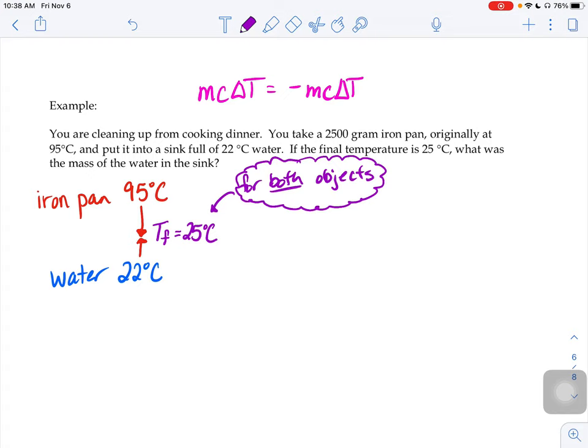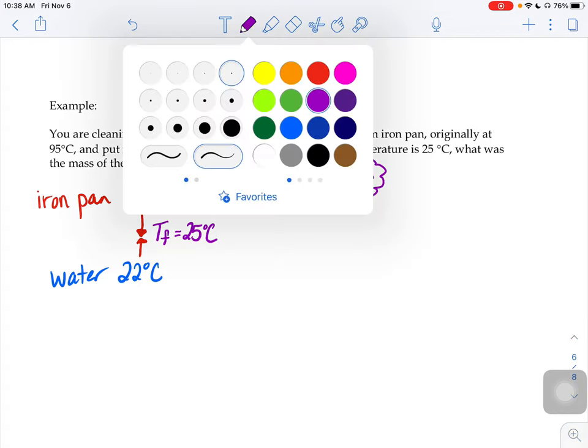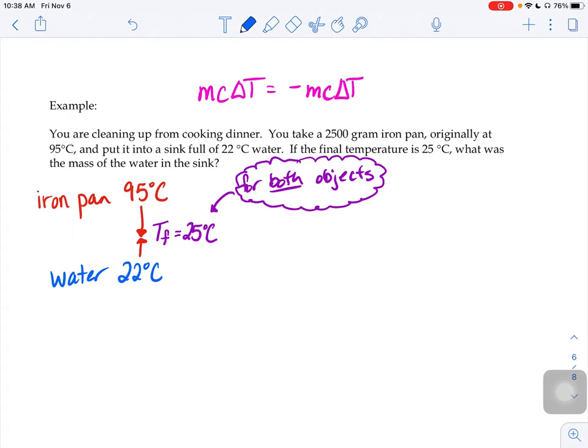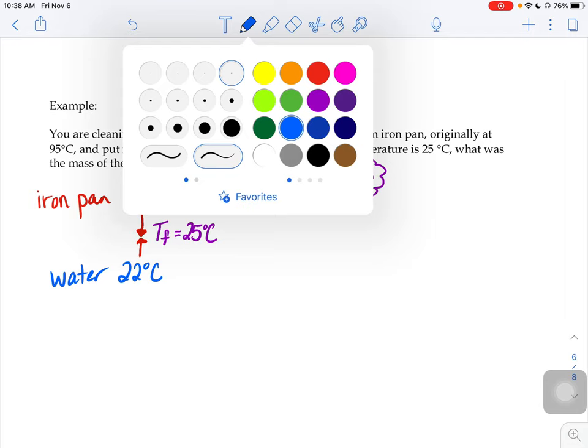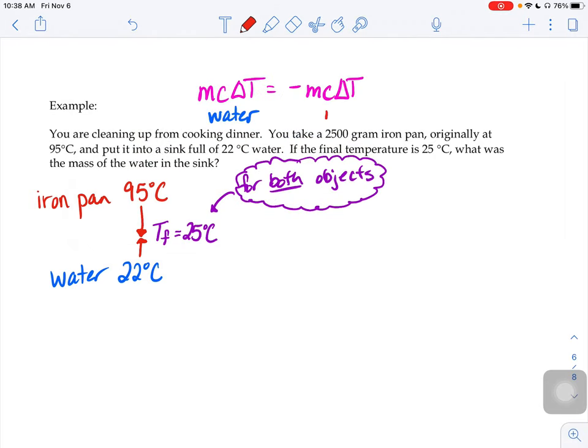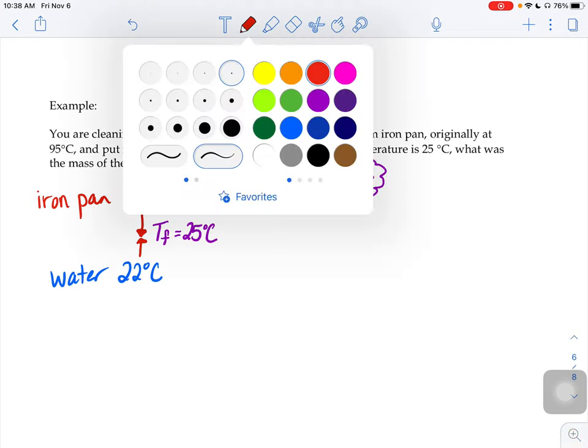So what I'm going to do in this problem, our water is the object that's warming up. So I'm going to put everything about the water on the left hand side of this equation. And my iron pan is the thing that's cooling down and releasing the heat energy. So I'm going to put everything about the iron on the right hand side of my equation.